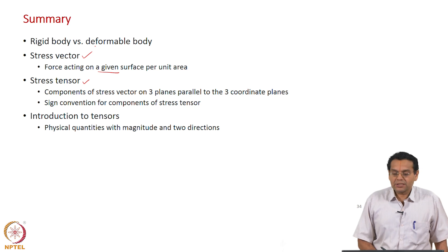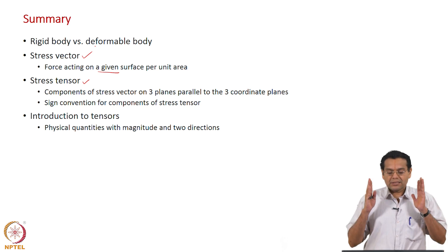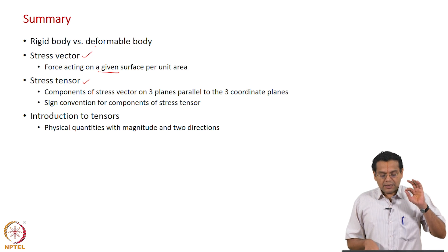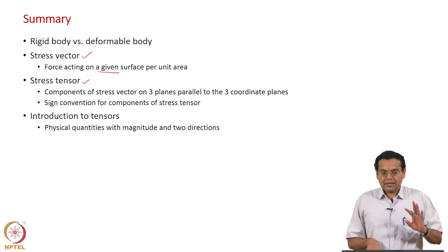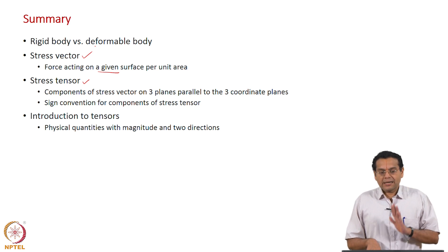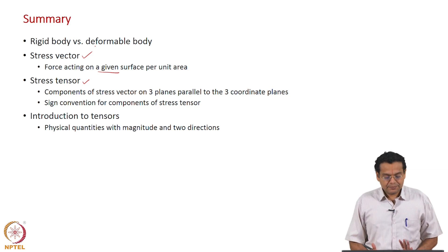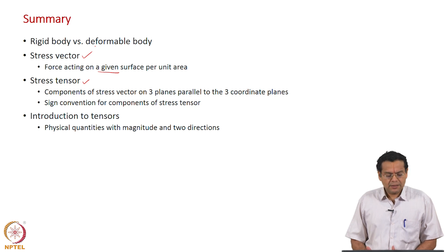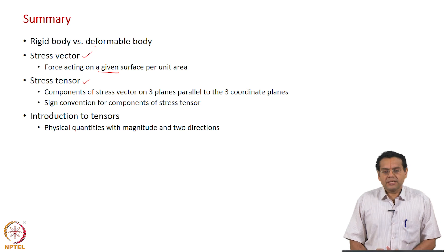To summarize: we started by differentiating rigid bodies from deformable bodies, moving toward deformable solid mechanics applied to fluid mechanics. We defined the stress vector as force per unit area on a given surface, then introduced the stress tensor with 9 components — the components of three stress vectors acting on planes parallel to the coordinate planes. We also discussed the sign convention with examples, and had a brief introduction to tensors as physical quantities characterized by a magnitude and two directions.